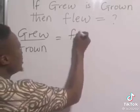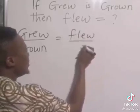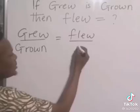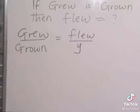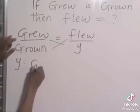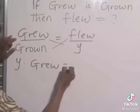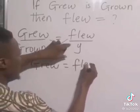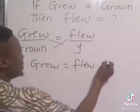Is equal to flew all over the past participle we don't know, so we can represent it with y. Then cross multiply: y times grew equals flew times grown.